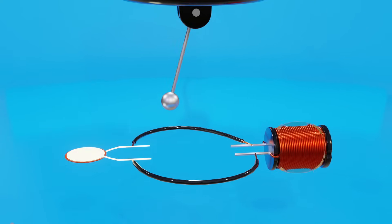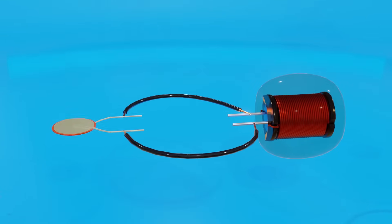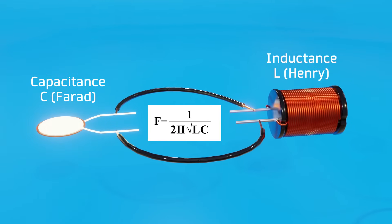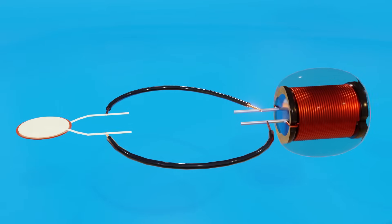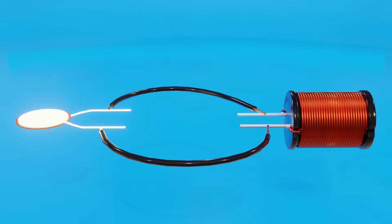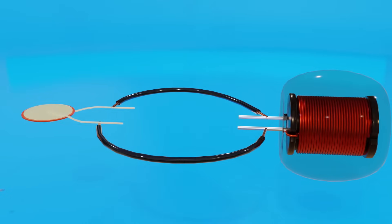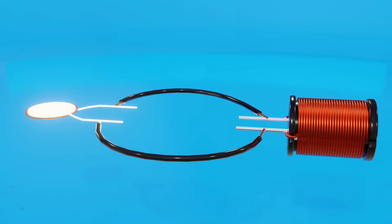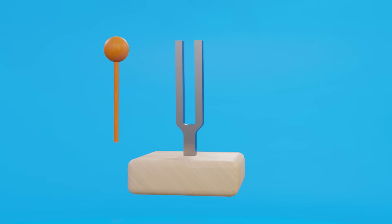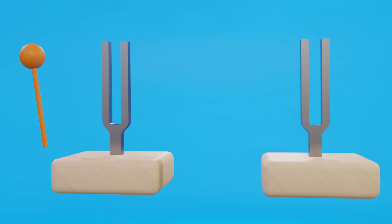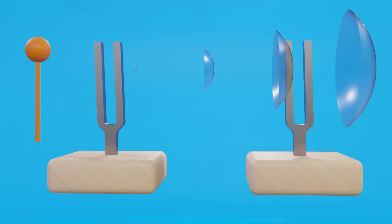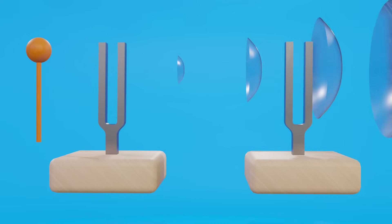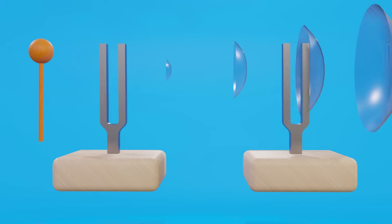Resonant circuits have their own oscillation frequency, defined only by the inductance of the inductor and the capacitance of the capacitor. The inductor generates an electromagnetic field oscillating at this constant frequency — like a tuning fork, which when hit generates a specific frequency. When two tuning forks with the same frequency are placed near each other and only one is struck, the second will eventually start vibrating, because the air pressure changes move it at exactly the right moment, amplifying its motion — exactly as with the pendulum.